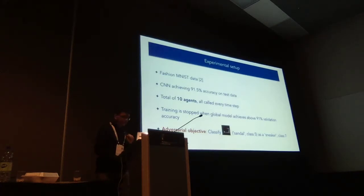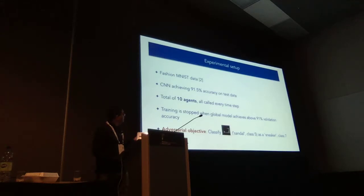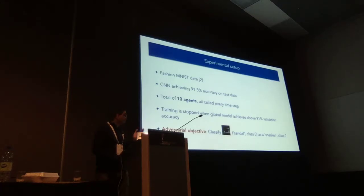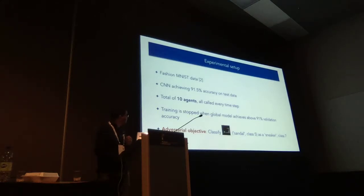What's the experimental setup? We work with Fashion MNIST. The CNN architecture achieves 91.5% accuracy on test data when all agents are benign. There are 10 agents, and all of them are called at every time step including the malicious agent. We stop training when the global model achieves 91% validation accuracy. The adversarial objective is to classify an image of a sandal — which is class 5 for Fashion MNIST — as a sneaker. There's just one target example.